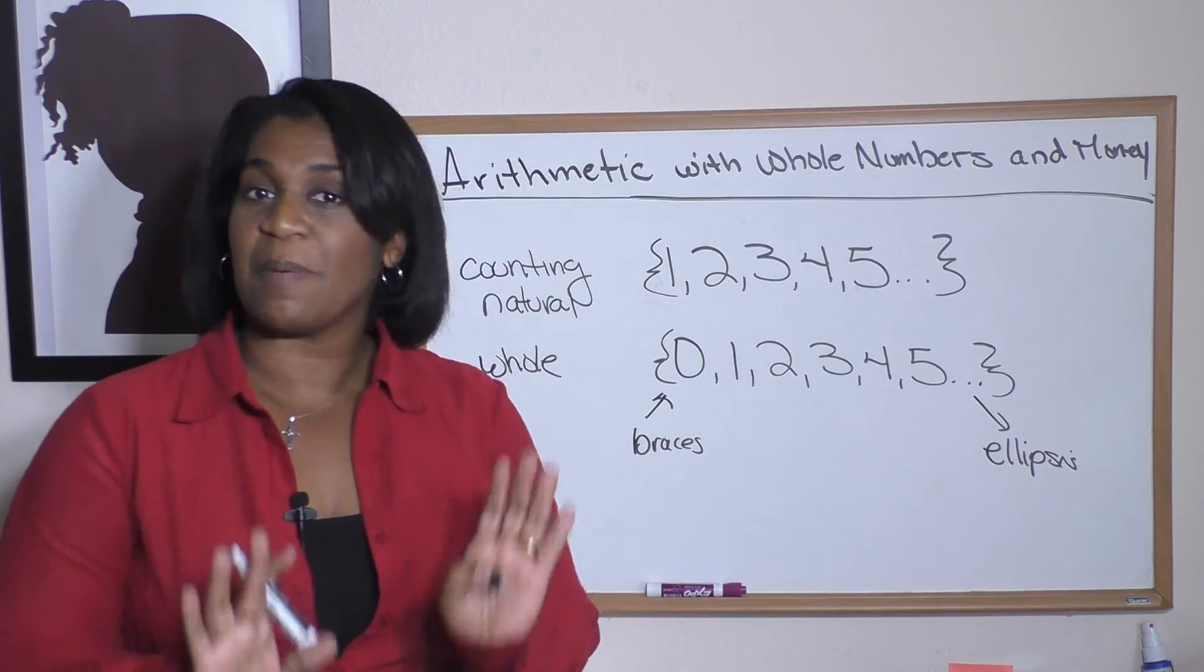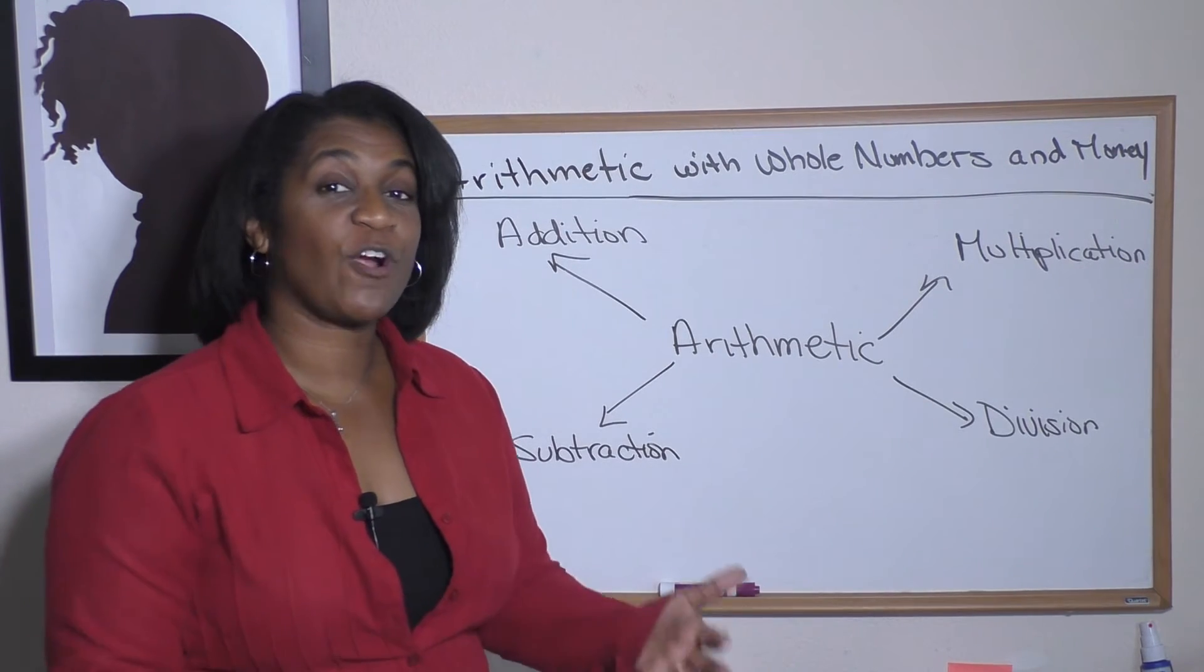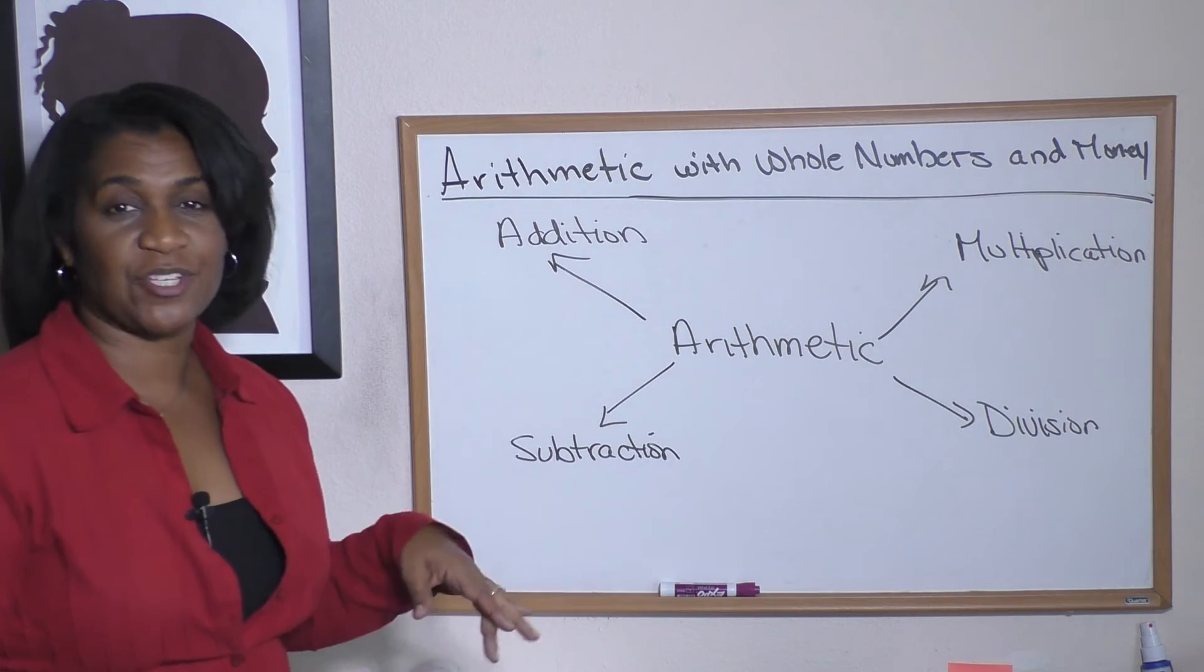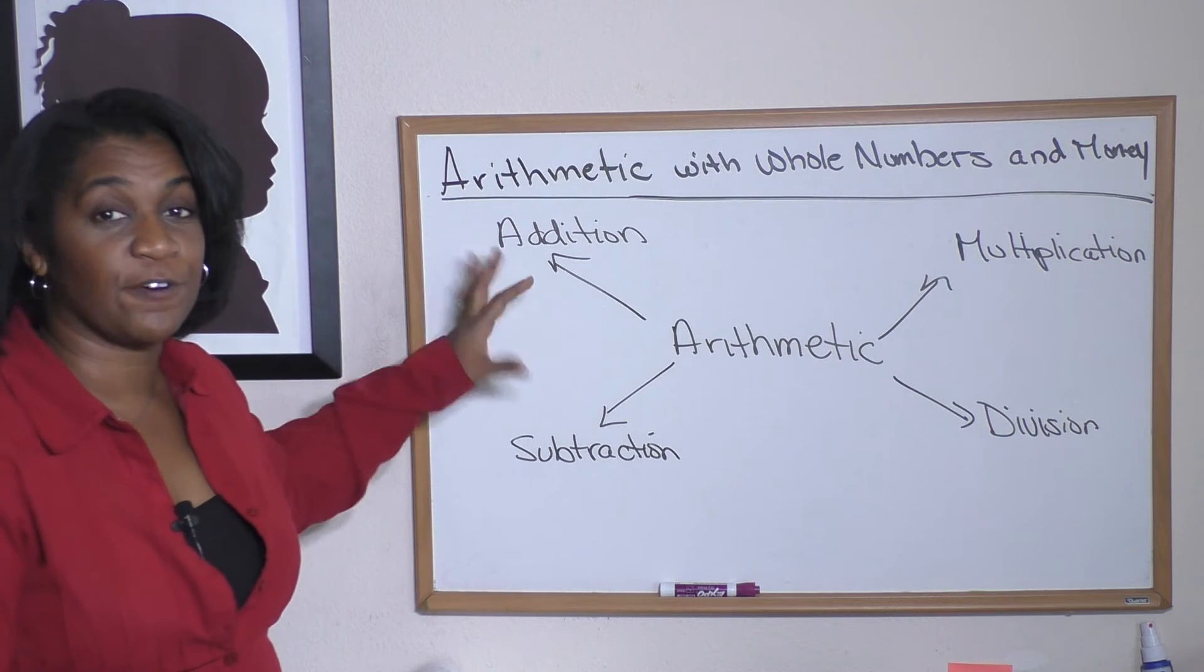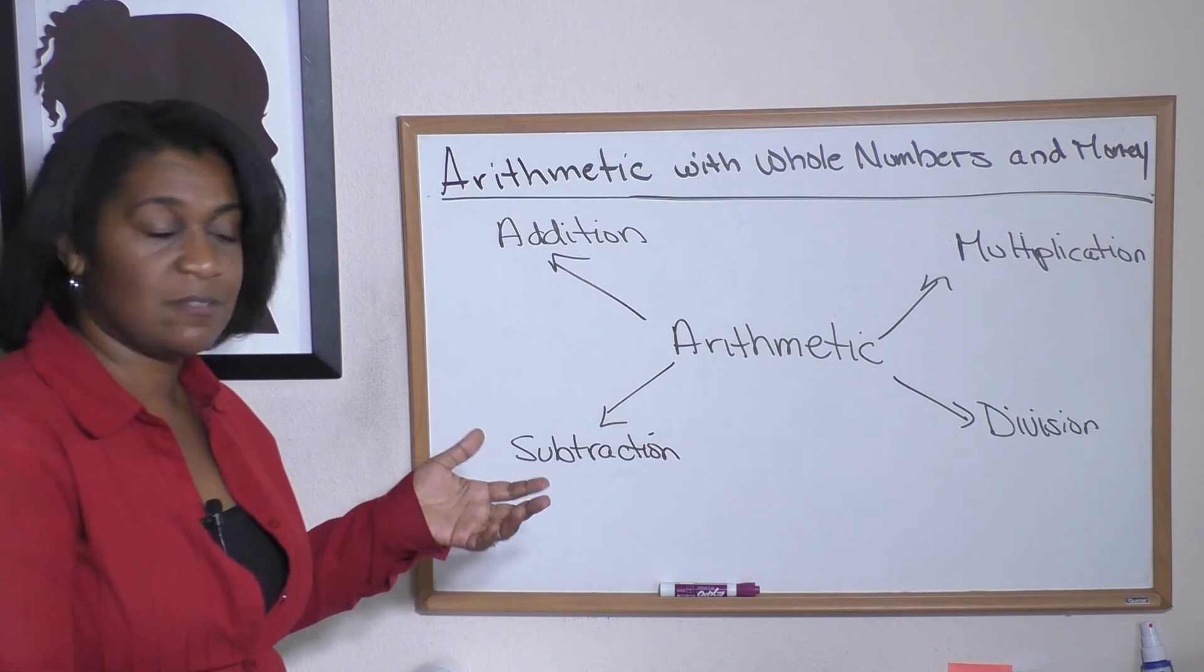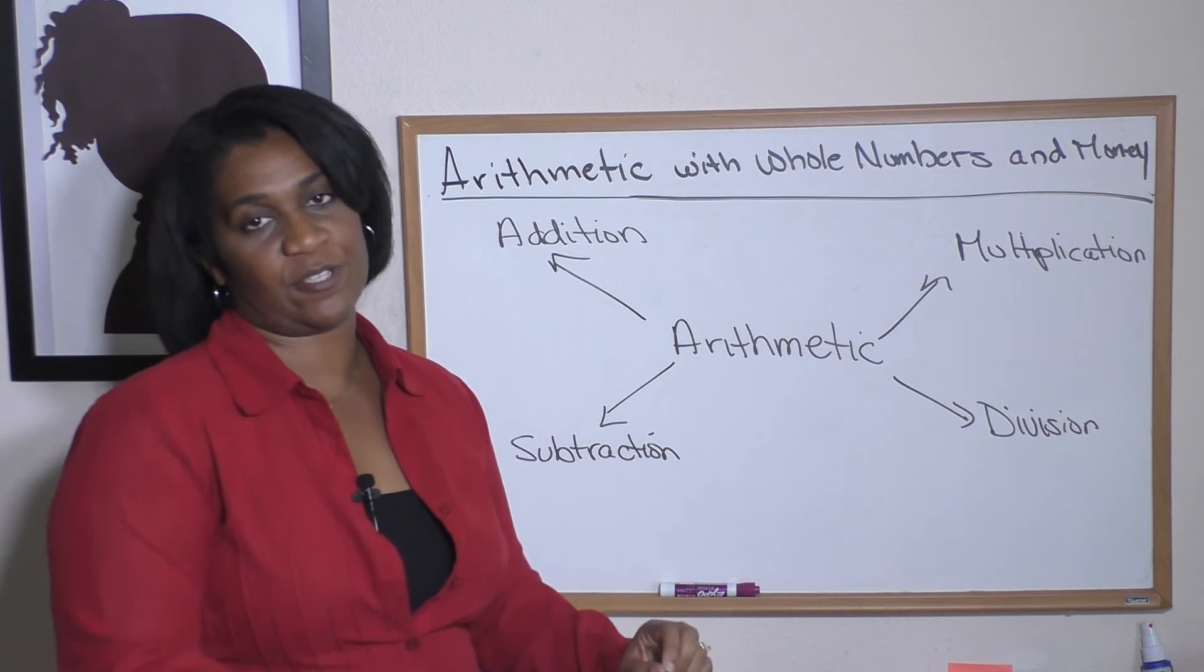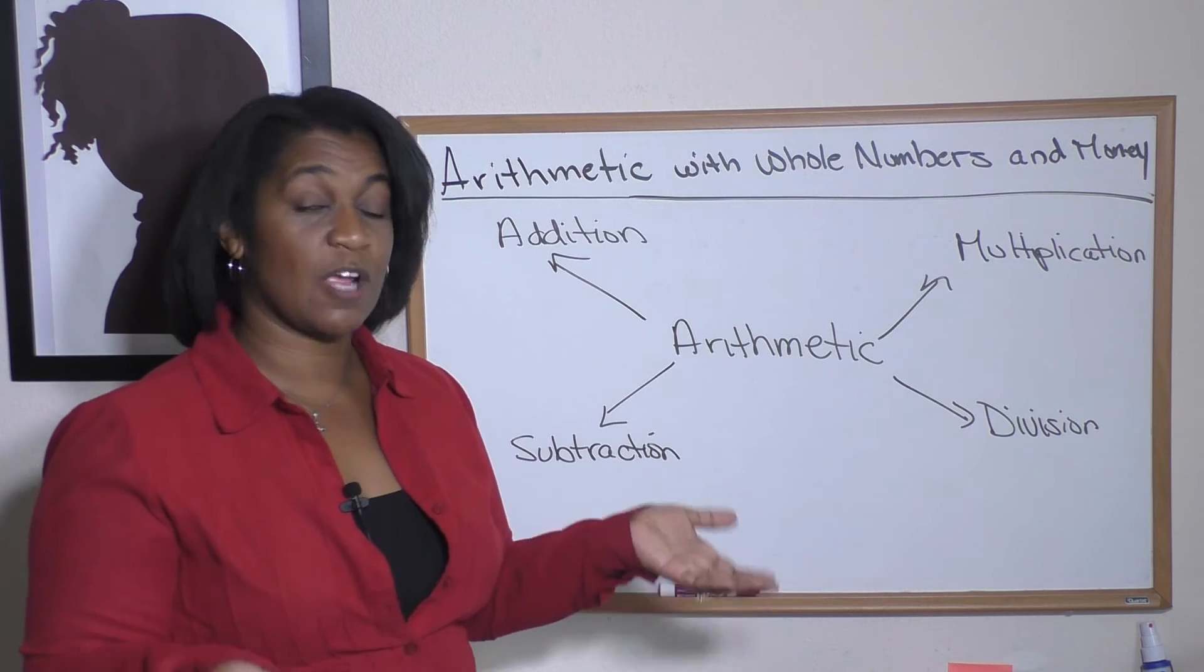The next thing I want to show you are the four operations of arithmetic. When we say arithmetic, we're talking about four things: addition, subtraction—those two are generally grouped together and they're called inverse operations because they're opposite operations—and multiplication and division. Those are the third and fourth parts of arithmetic, and those are inverse operations; they're opposites of each other.